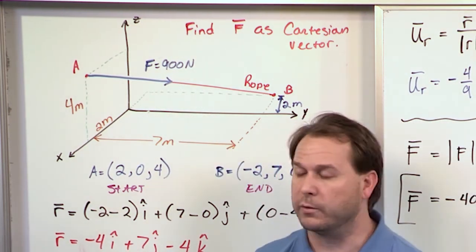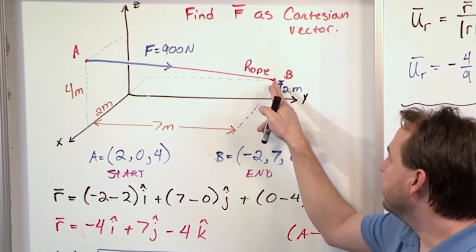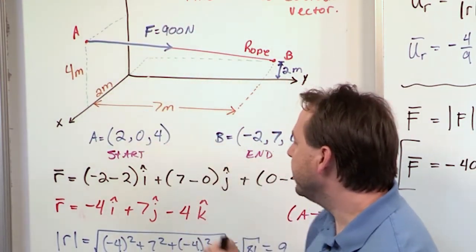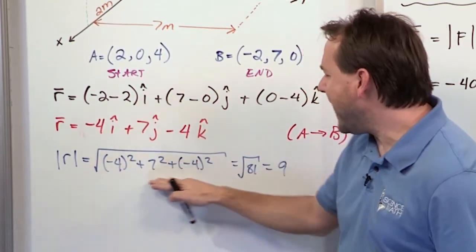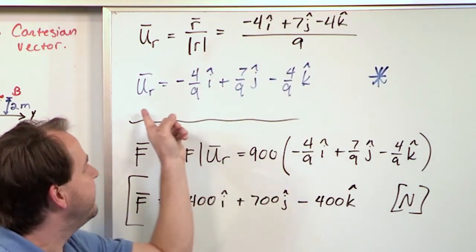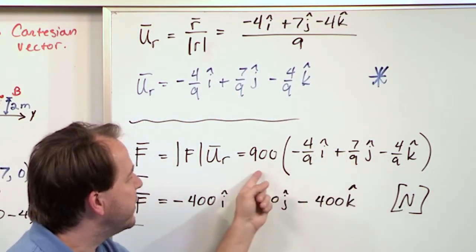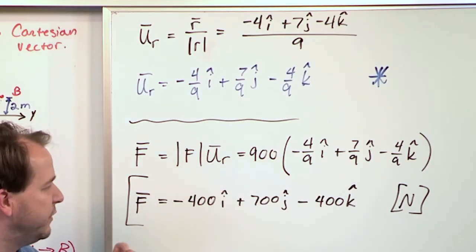The first thing is, you have to define a position vector that goes and ends over here and starts over here. Then we find the magnitude of that. Then we take the position vector, divide by its magnitude, that gives us a unit vector in that direction. And then finally, we take that unit vector and multiply by the magnitude of the force in newtons.